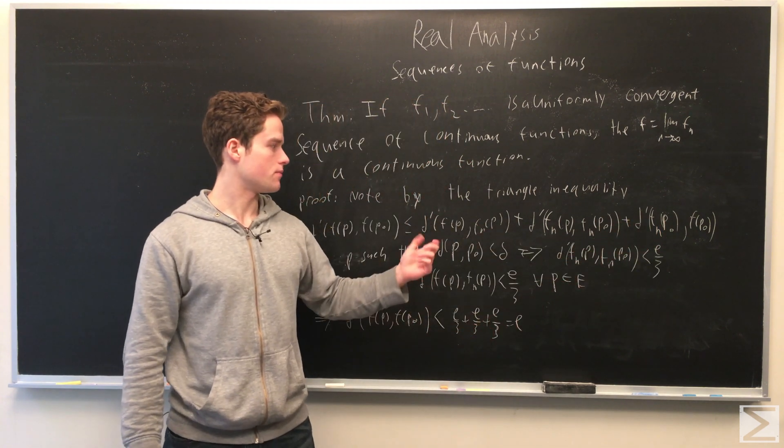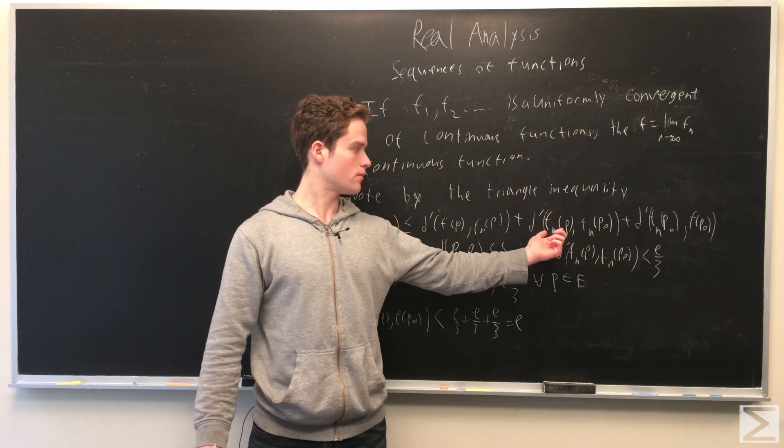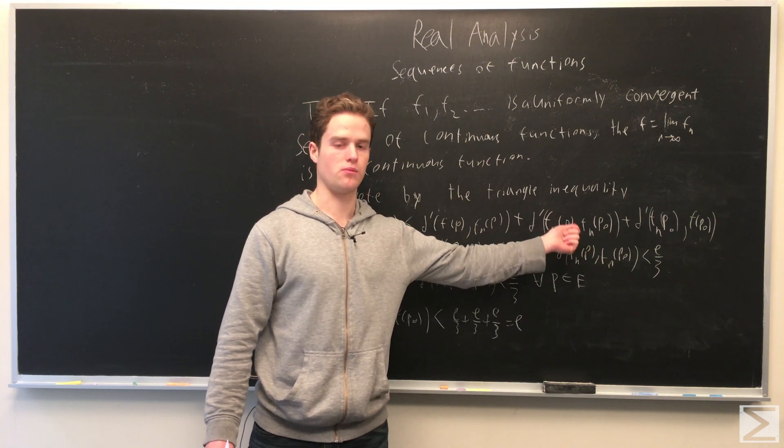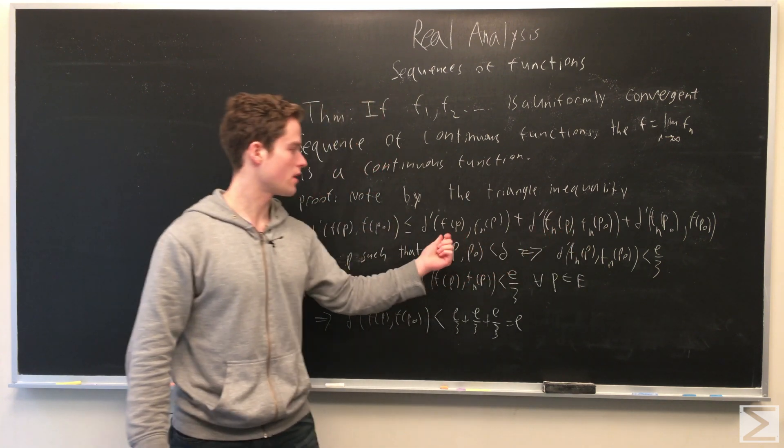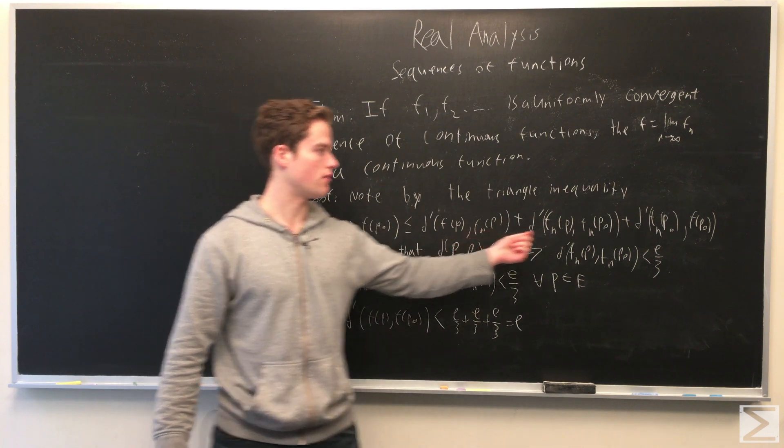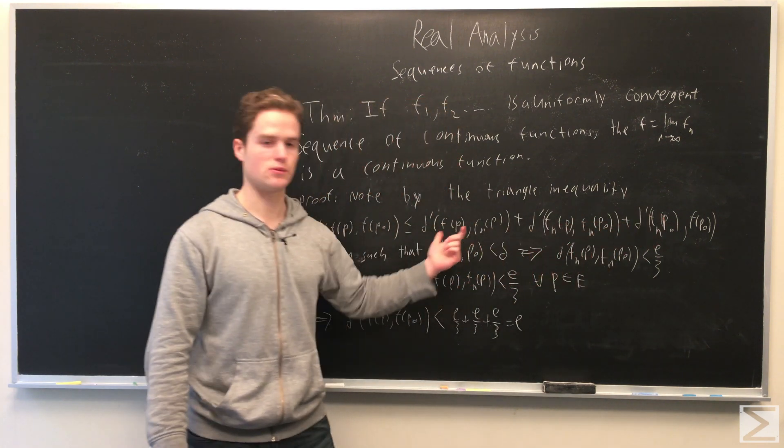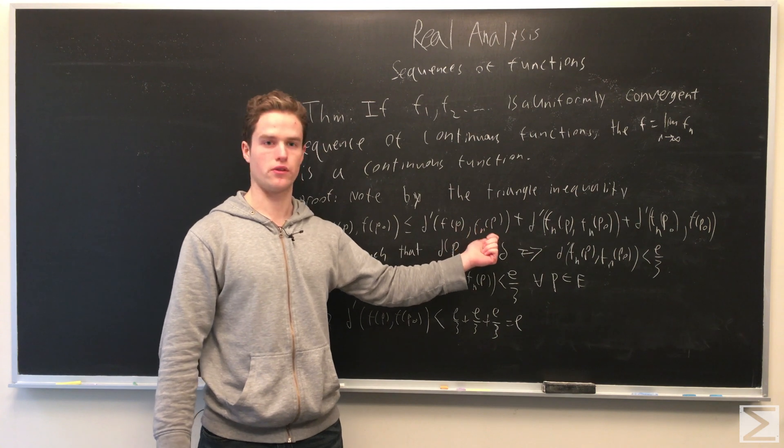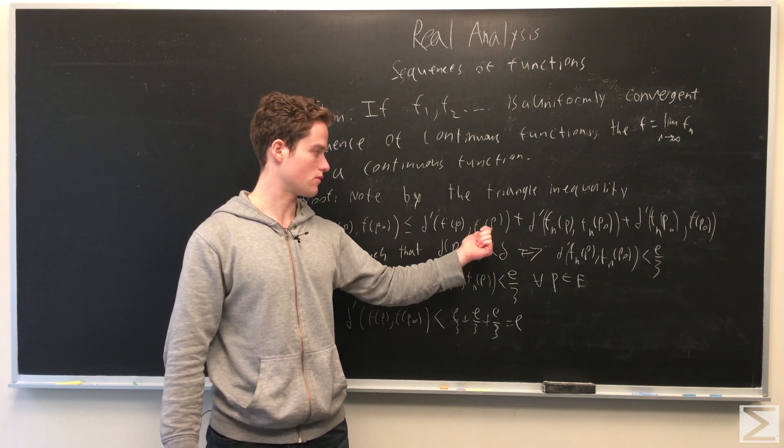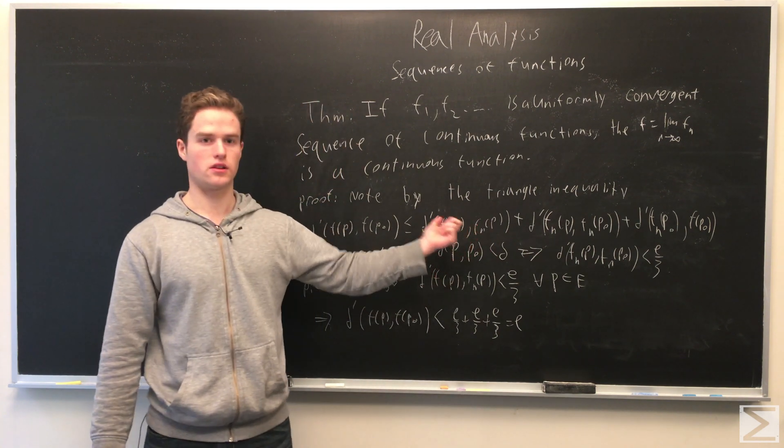The middle term we can make as small as we want by taking p close enough to p_0 because f_n is continuous. The first and last terms, f(p) and f_n(p) and f(p_0) and f_n(p_0), we can make as small as we want because f_n is a uniformly converging sequence of functions.